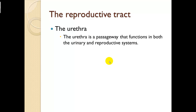The urethra is a passageway that functions in both the urinary and reproductive systems. In males it provides a passageway not only for urine but also for semen.